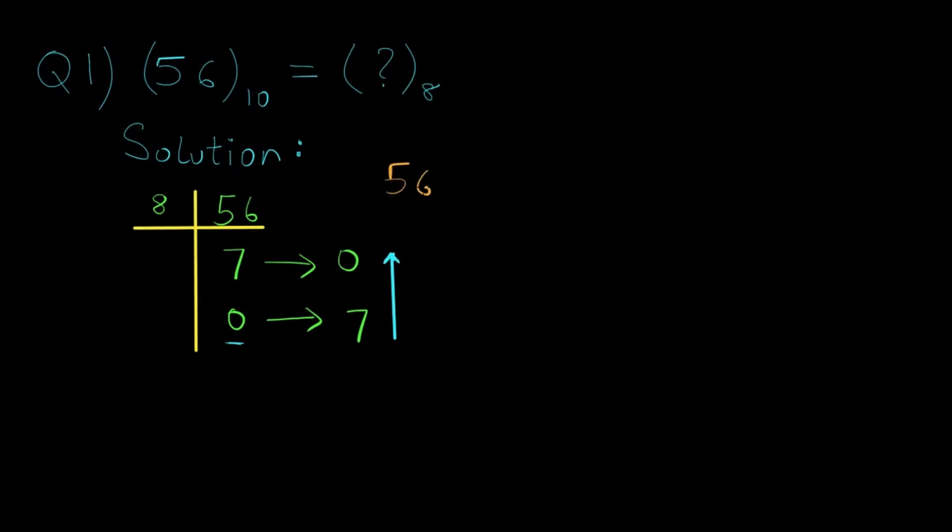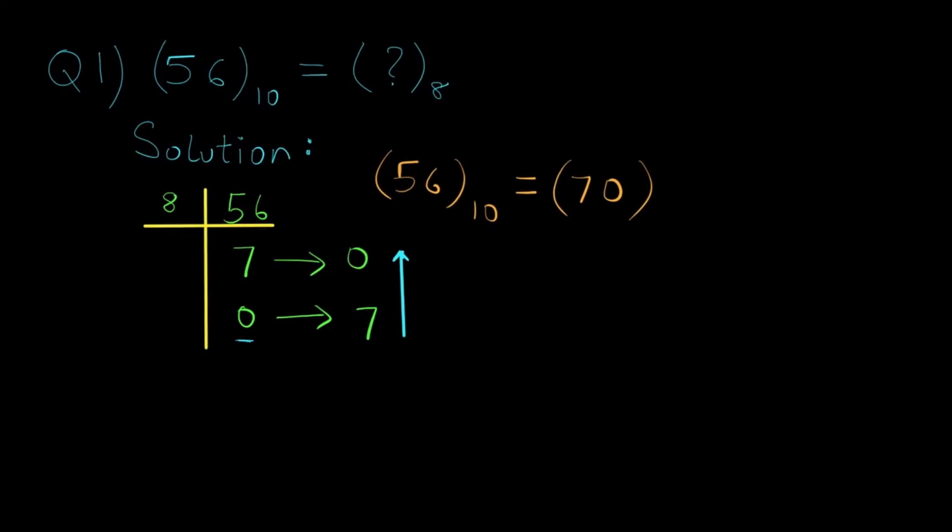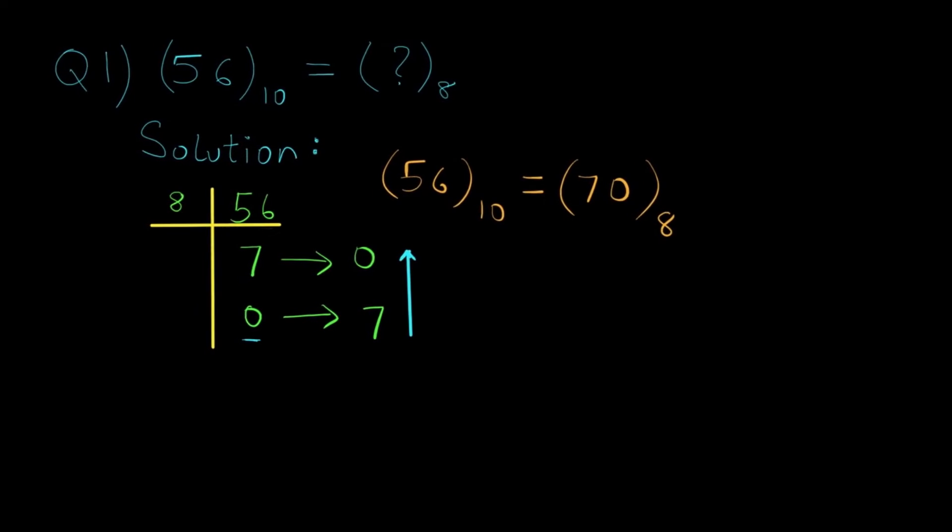This means 56 in decimal is equal to 70 in octal number system.